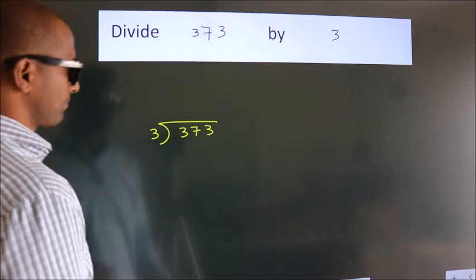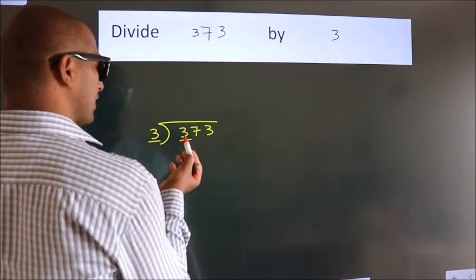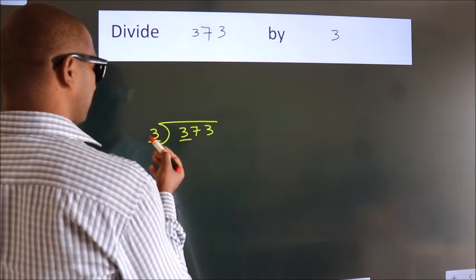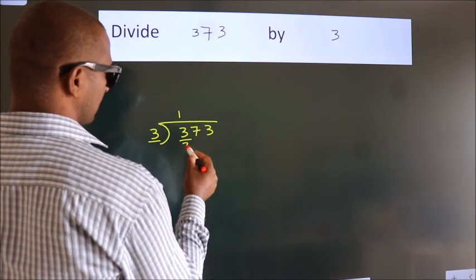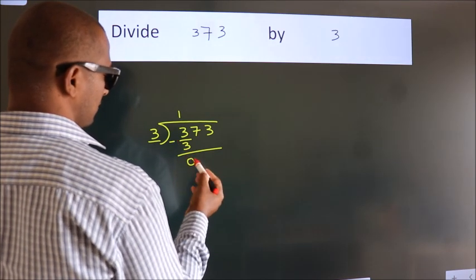Next, here we have 3, here 3. When do we get 3? In the 3 table, 3 times 1 is 3. Now, we should subtract and we get 0.